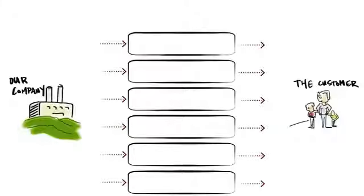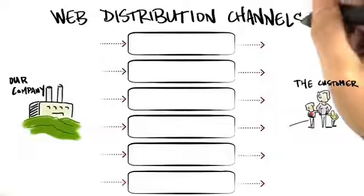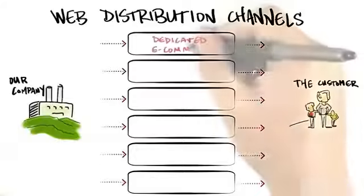If you remember in our last slide, one of the choices was whether you were using physical or virtual distribution channels. Let's take a look at virtual channels, which are not only the web, but also might include iPhone apps or the cloud as well.